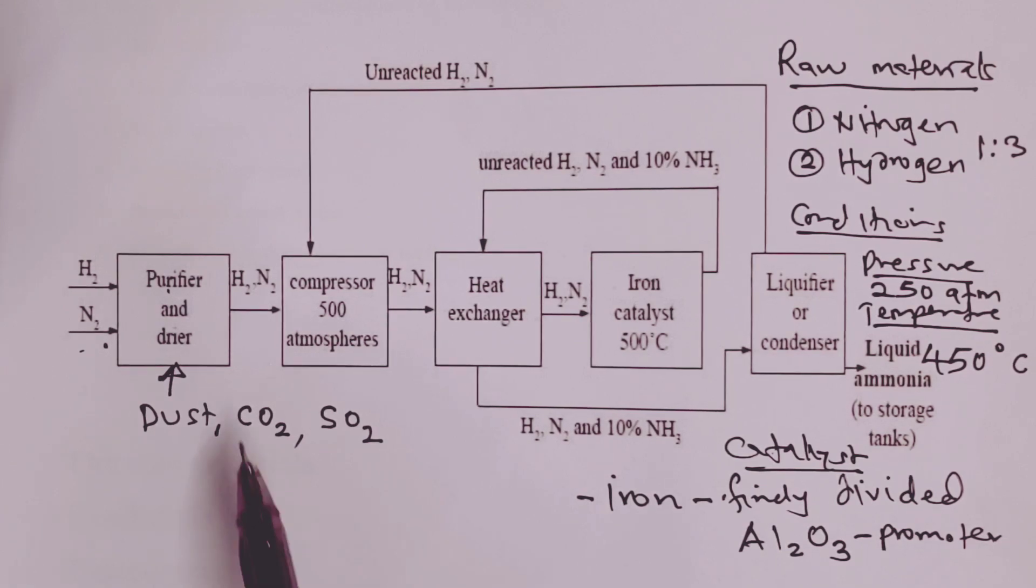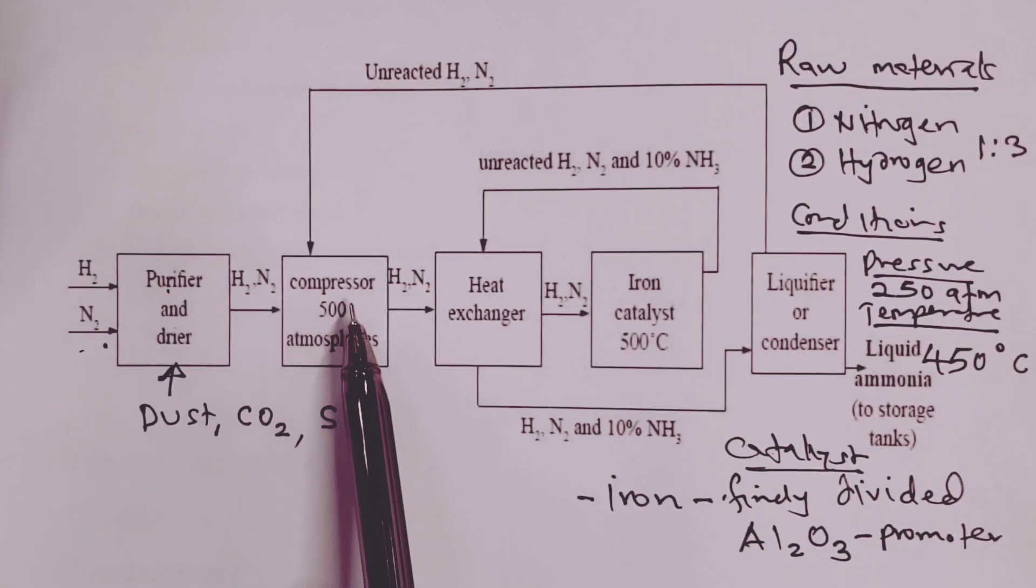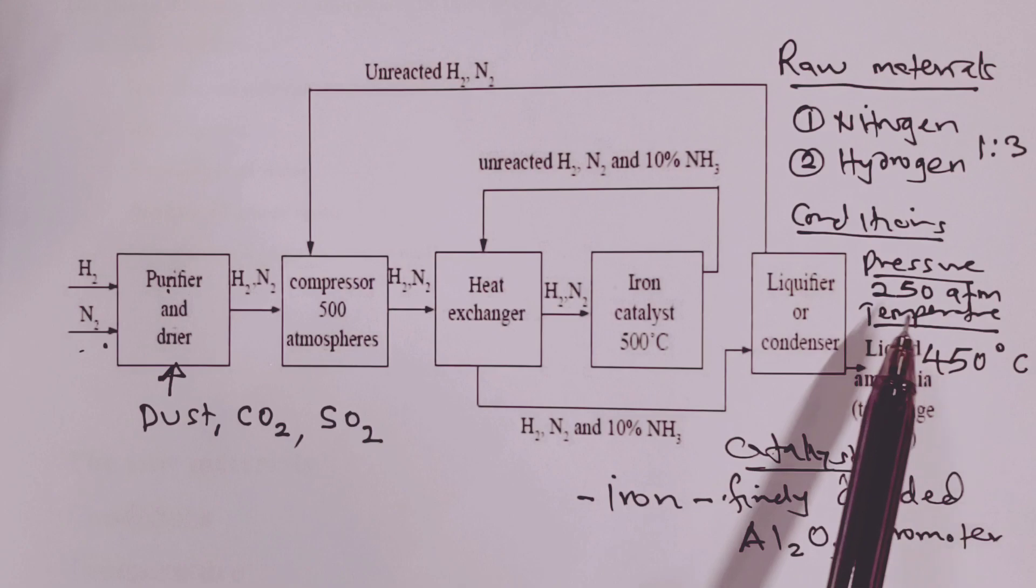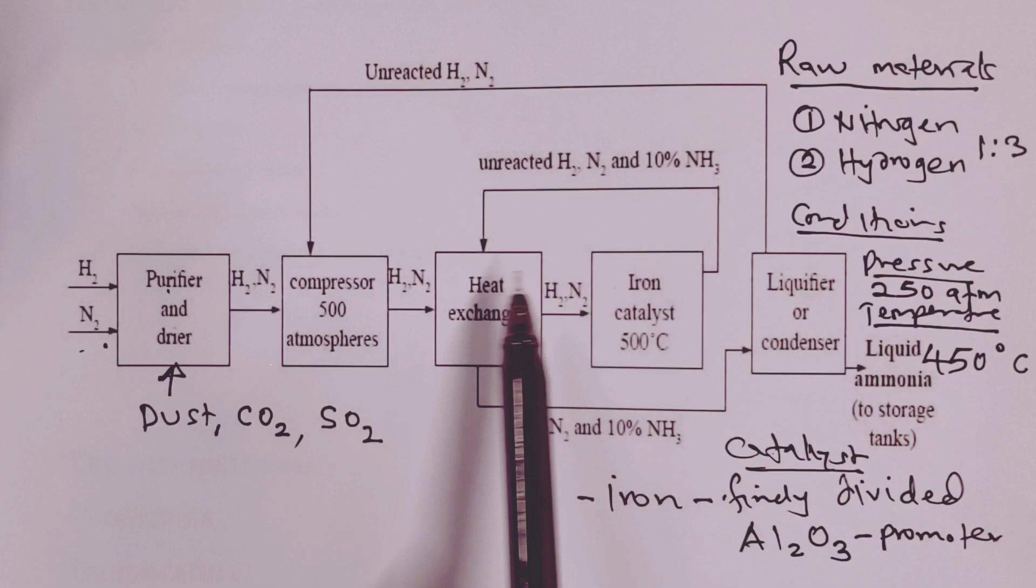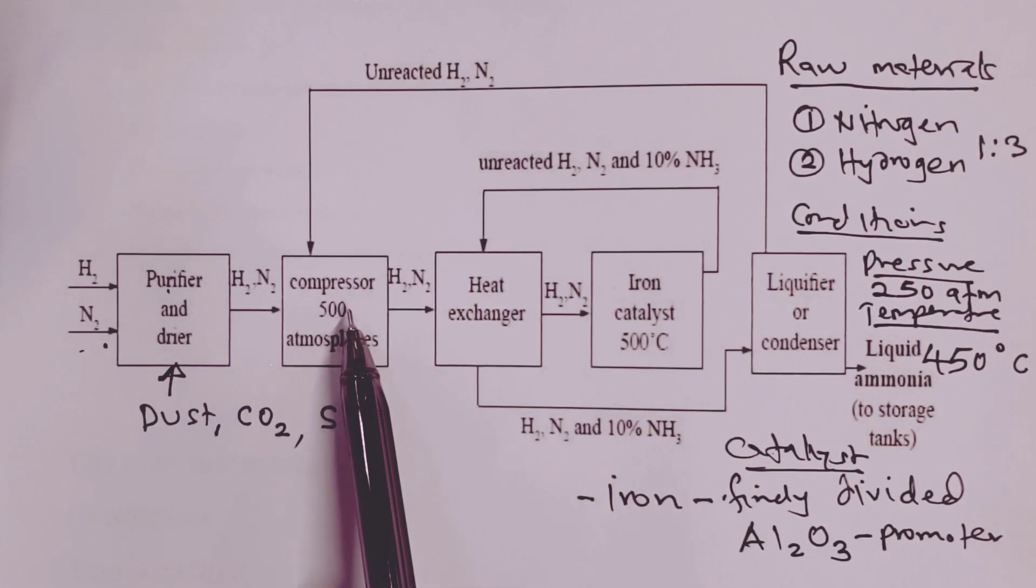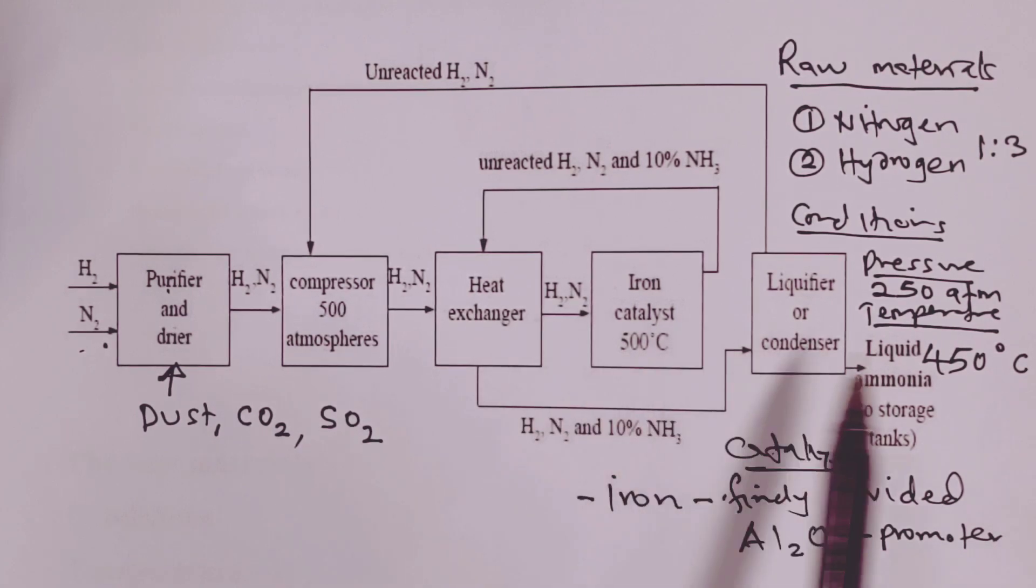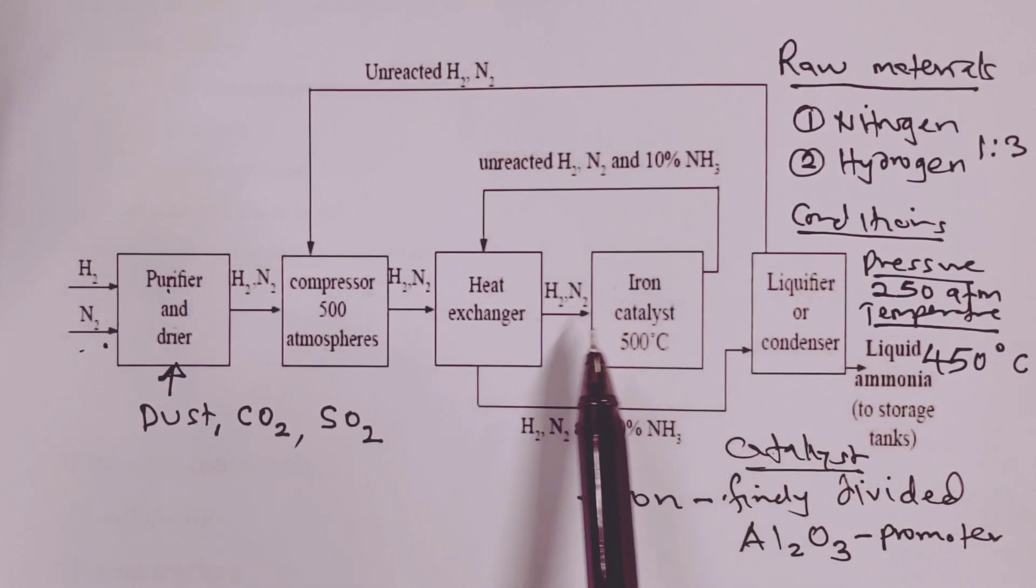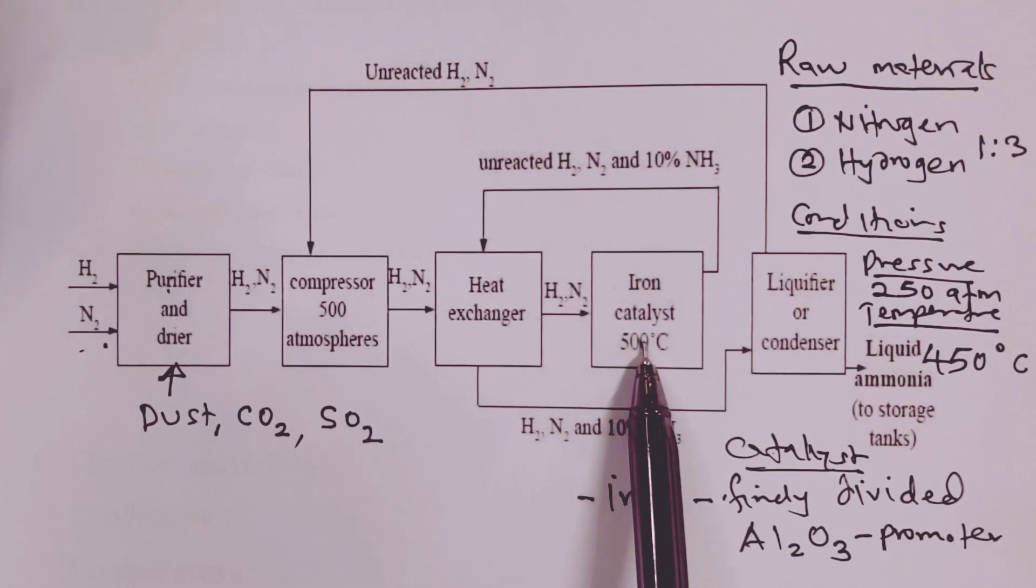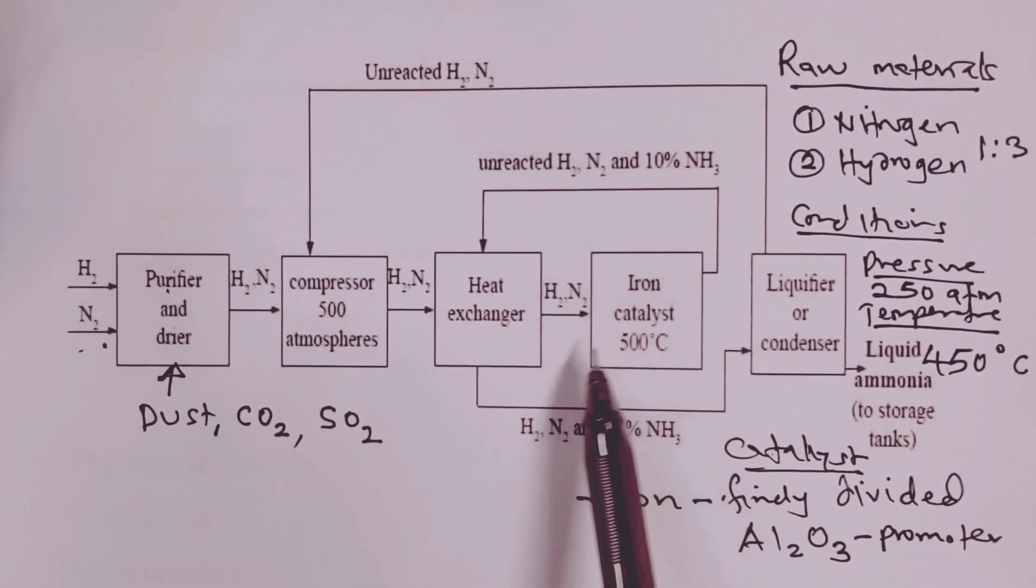Once we have purified and dried our mixture, we then compress to attain the pressure that we have just discussed here. Once our mixture is compressed, we take it to the heat exchanger where now we heat to the optimal temperature. Once we have obtained hot compressed mixture, then now we take it to the catalytic chamber where we have iron catalyst.